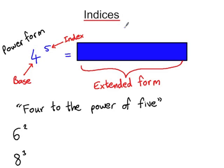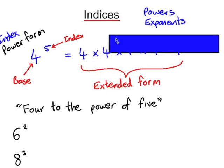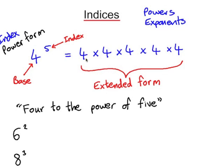This lesson is all about indices. You may have heard indices referred to as powers or exponents, and you can recognise them by the superscript small number raised to the right. Here's a number written in index form or power form. It has a base of four and an index of five. What this means in extended form is four multiplied by itself so that we've got five fours.